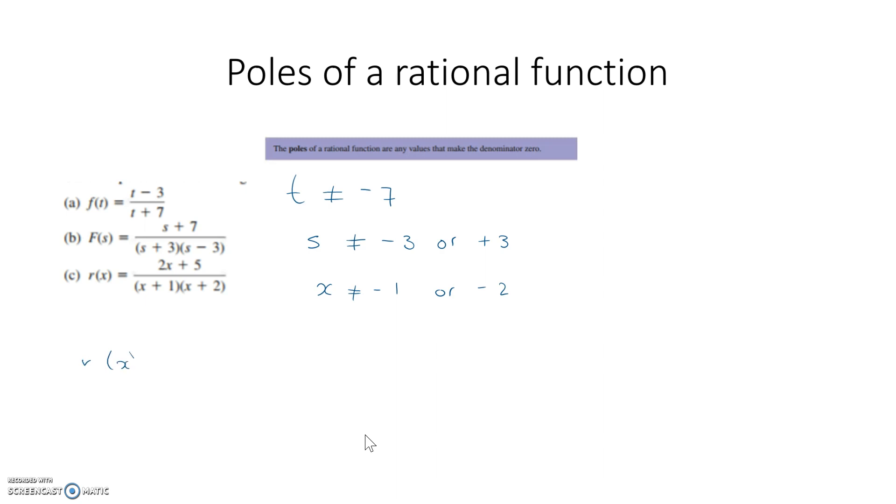If we have something like this, then we're going to have to do a little bit of work to find the poles. As it happens, it's actually the same as C, and it factorizes to X plus 1, X plus 2, so the poles are the same.